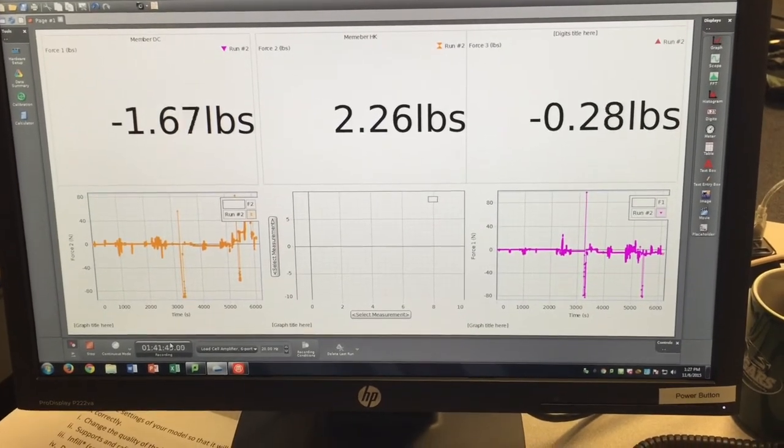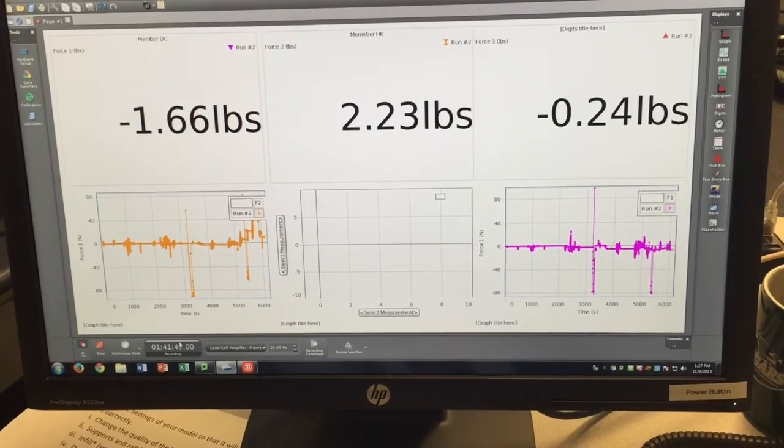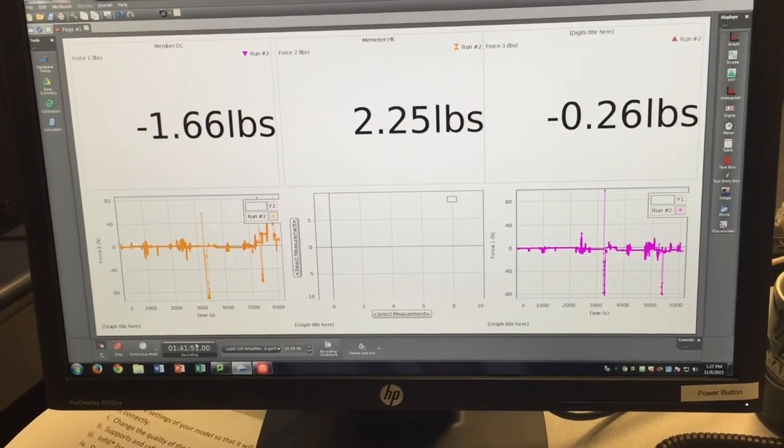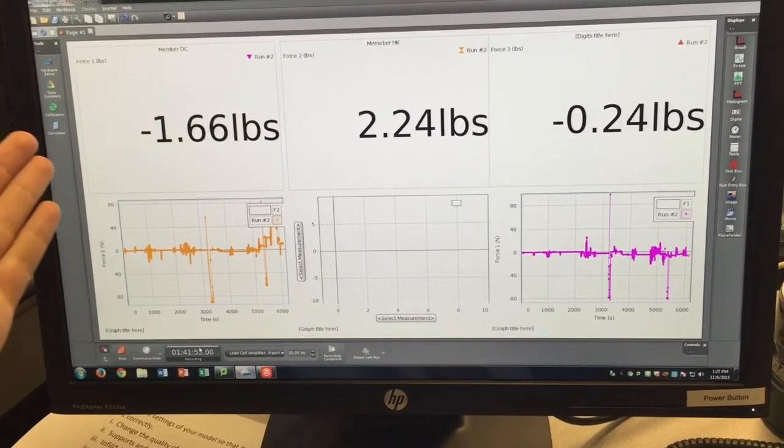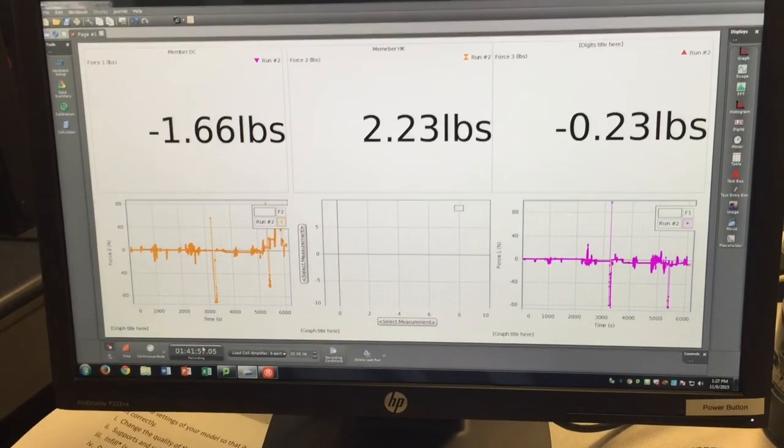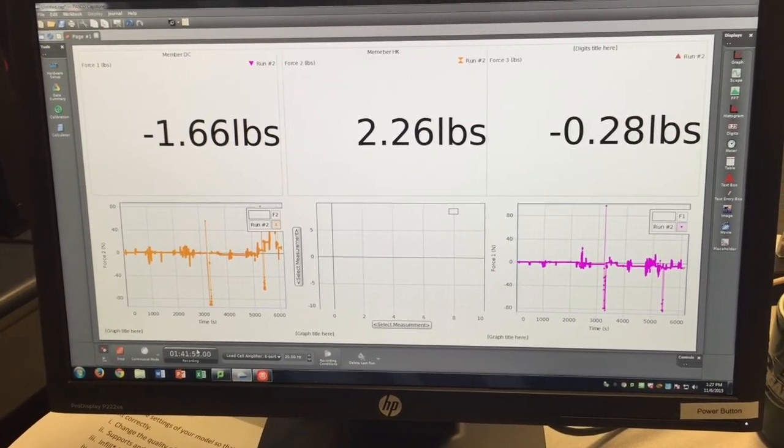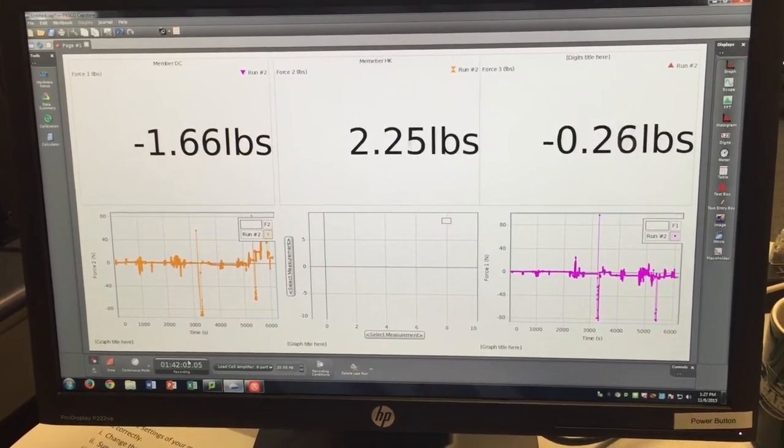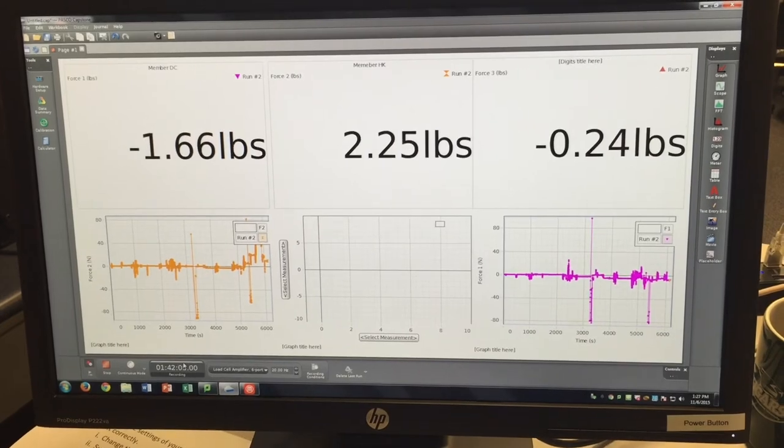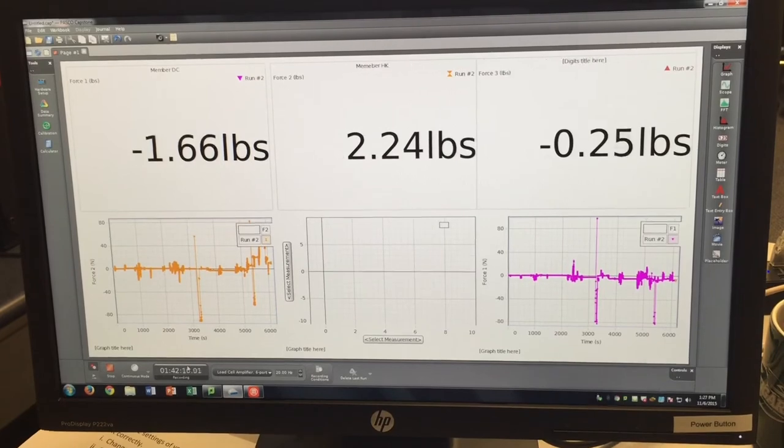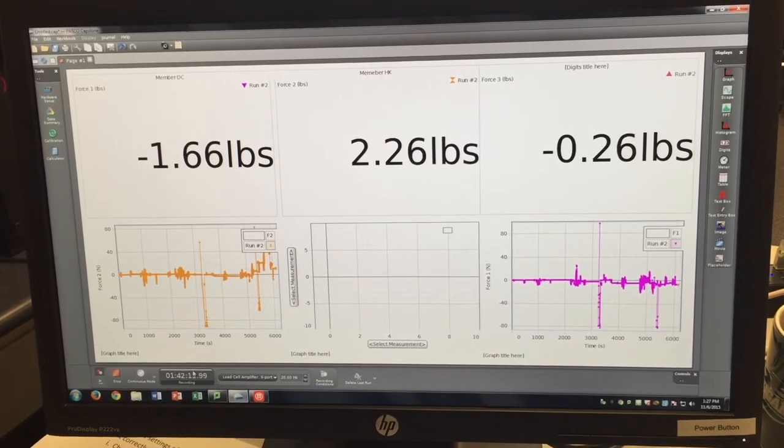When we hooked up our load cells to our members that we measured, we are able to notice that we were pretty close on our calculation for the first member being in tension, which is represented by the negative sign in this program. And then if we look at the horizontal member that we analyzed, we see that is roughly 2.25 pounds, which is about double what we calculated. We're not 100% sure on why that is. It could be due to the gusset plates transferring forces in ways that we are unsure about or other unknowns.